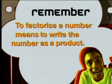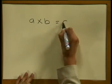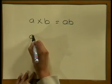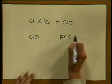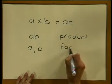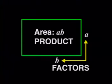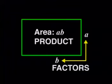Remember this: to factorize a number means to write the number as a product. Let's look at another simple example. What is A times B? A times B is AB. So over here, AB is our product and A and B are our factors. If we show this in a diagram of a rectangle, note again that the area of the rectangle is AB — this is the product — and the length and the breadth are B and A respectively.